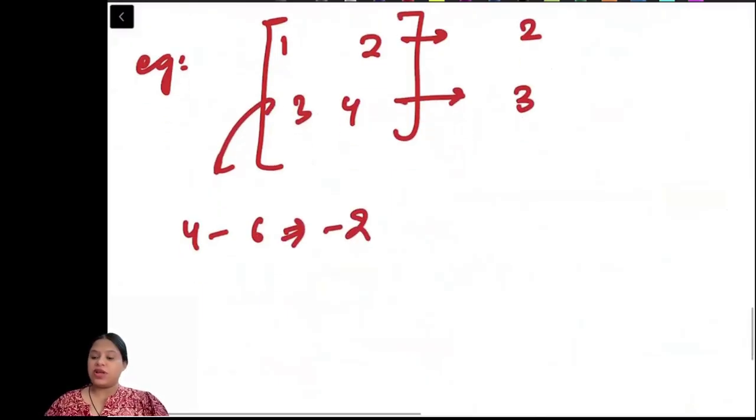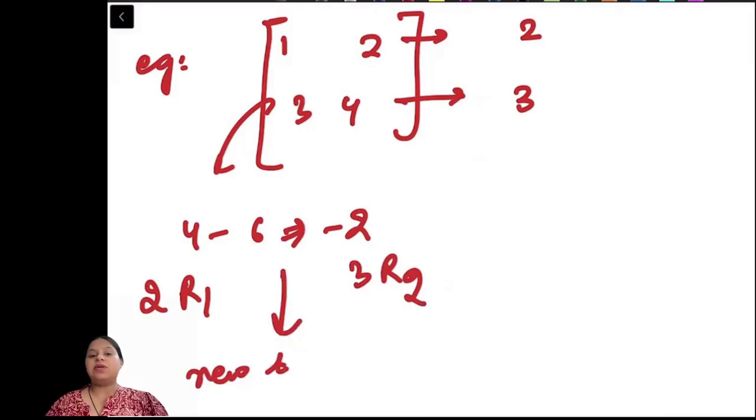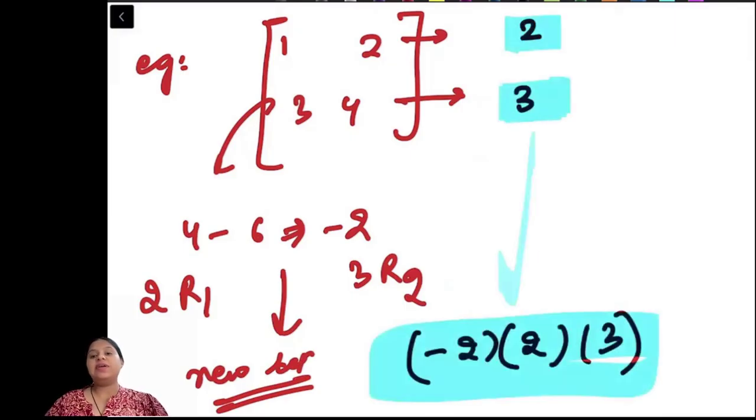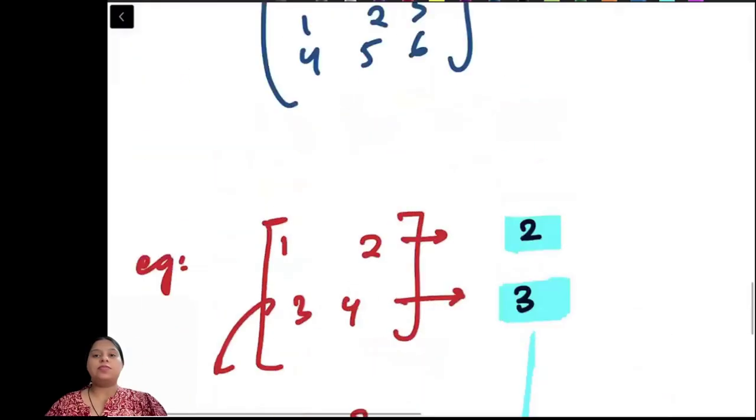If the question says row 1 is multiplied with 2 and row 2 is multiplied with 3, the new determinant will be minus 2 times 2 times 3. The determinant will be multiplied with these scalars. When each row is scaled, the determinant is also scaled by that amount.